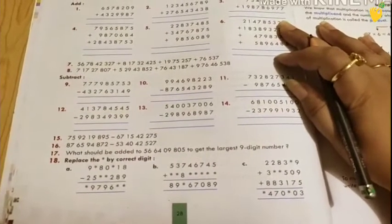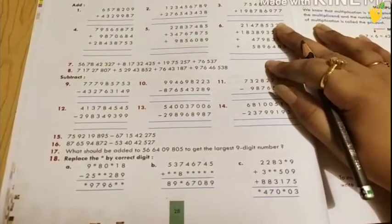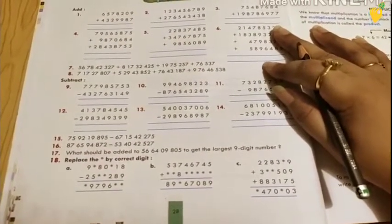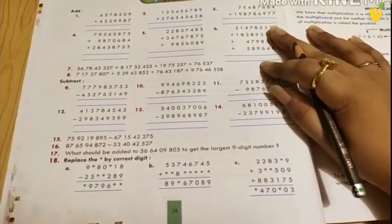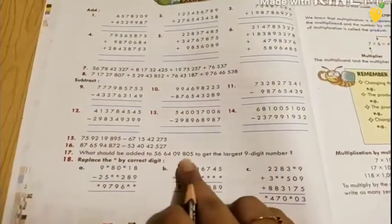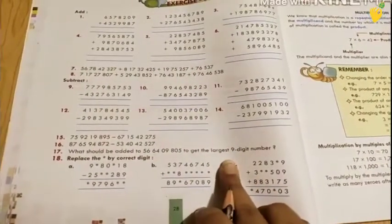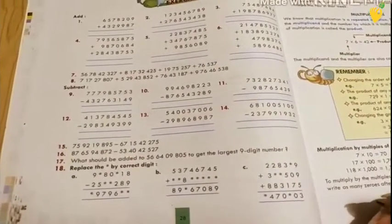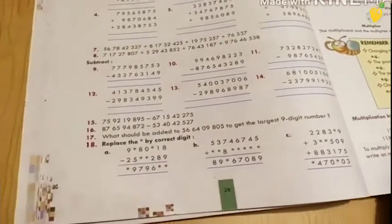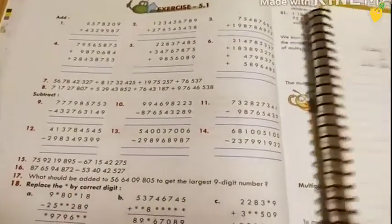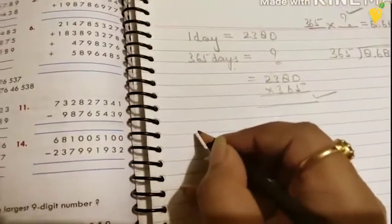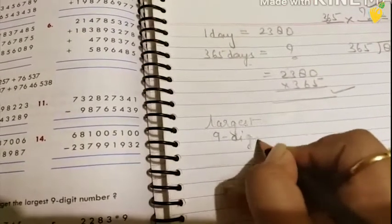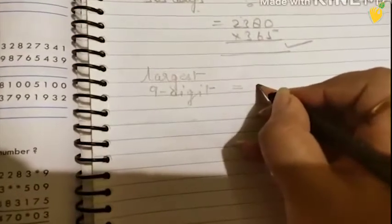Question number 17: What should be added to 56 crore 64 lakh 9,805 to get the largest 9-digit number? This question means that we will add to this number. So this is the largest number of 9 digits.